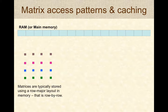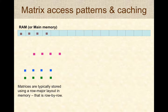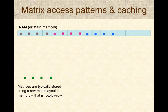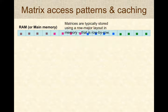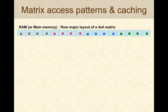Consider a 4x4 matrix. Matrices are typically stored in row-major fashion — that is, row by row: the first row is stored in memory, followed by the second, third, and fourth. Having a mental model of this row-major layout in memory is important when working with caches.